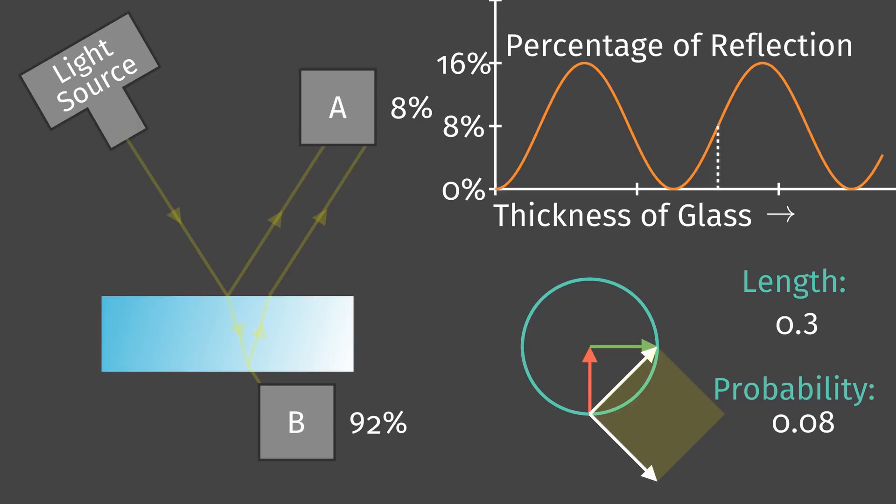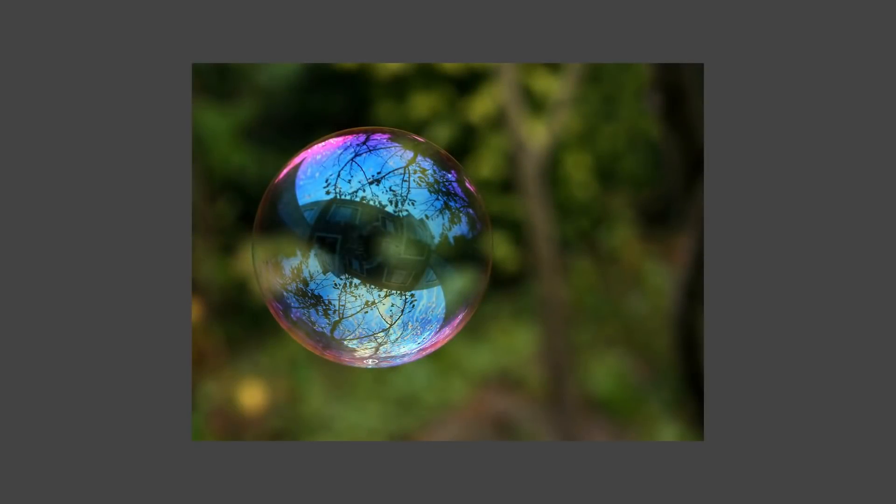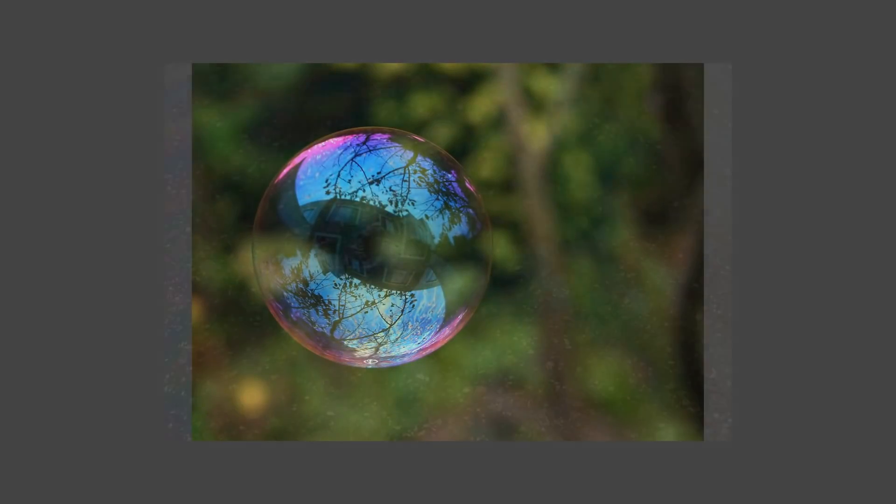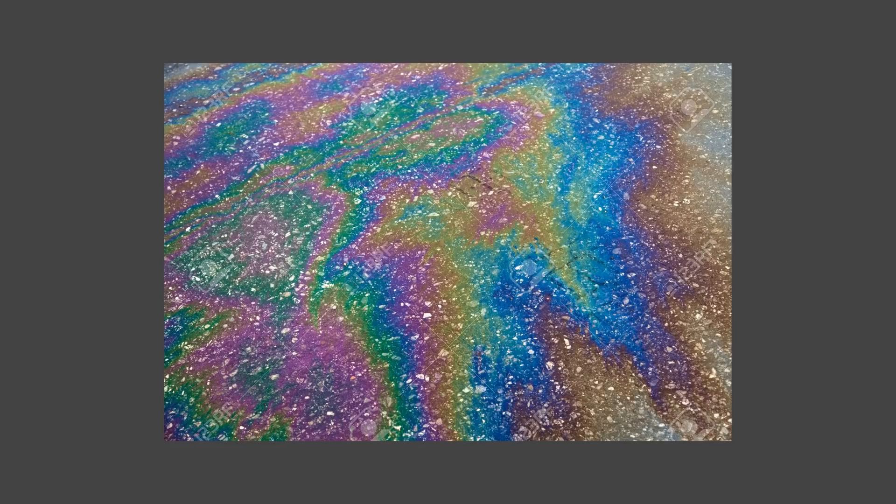I've shown you how this strange feature of partial reflection can be calculated using rotating arrows. The technical term for these arrows are probability amplitudes. Before we end, I'd like to show you why you'd see colors in a soap bubble, or why when you have oil puddles underground, you see beautiful colors on the surface. The thin layer of oil is really like a layer of glass. It reflects light from 0 to maximum, depending on its thickness.